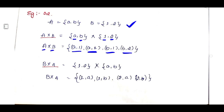Now for B cross A, write set B cross A. Take the first element 1 and pair with all elements of set A: ordered pair (1,a), ordered pair (1,b). Then take element 2: ordered pair (2,a), ordered pair (2,b). In this way we calculate A cross B and B cross A.